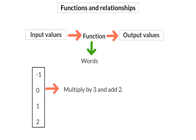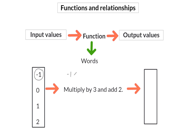To determine the output values I have to take the input values one by one and apply the function. So if I start with minus one, I will multiply this minus one by three to get negative three, and then add two. Negative three plus two will give me an output value of minus one.